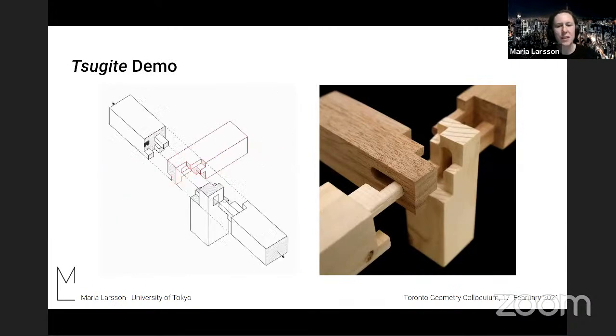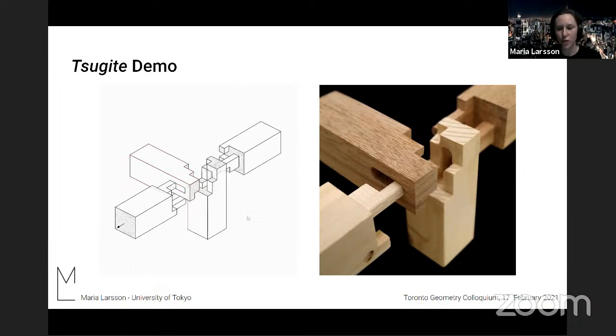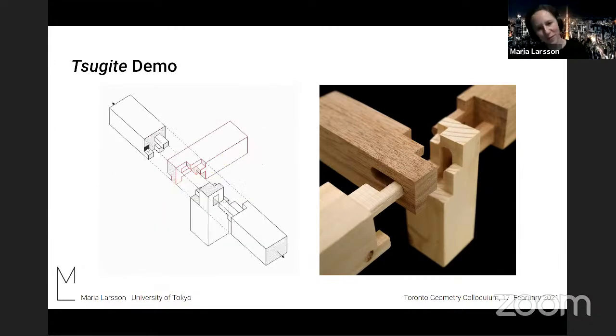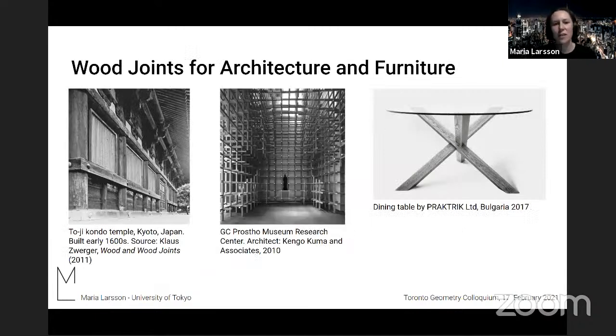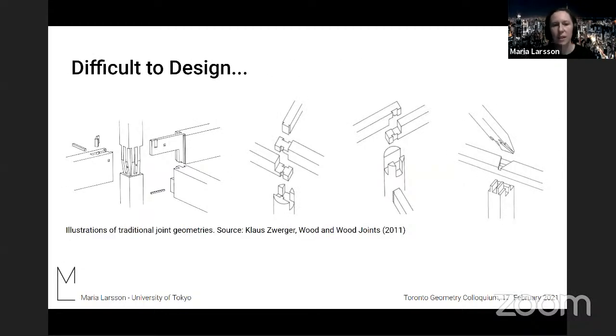And what we propose is a system to kind of facilitate both the design and the fabrication of wood joints. And first, let me share a bit about the background of this work. So wood joint, it's used for both architecture and furniture, both traditionally and also in recent examples. And the wood joints are appreciated both because of their aesthetic qualities and because they're very functional. But it is actually very difficult to design these kind of joints because the geometries easily get very complicated.